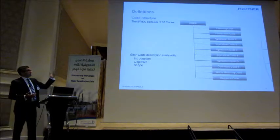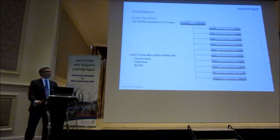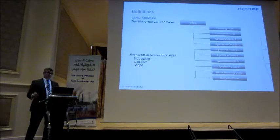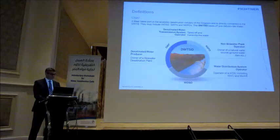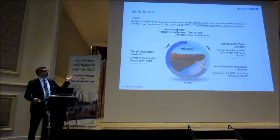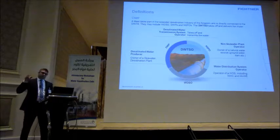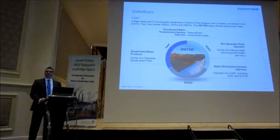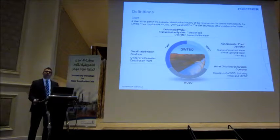The seawater desalination code consists of 10 codes together with the general conditions — 11 parts in total. The general conditions give basically the overarching format around the different codes of this document. I'd like to stress again that although Mishari introduced already the most important definitions, this slide will appear throughout the presentation more often to remind you. For the purpose of avoiding misinterpretations, definitions have been introduced to the code. At the end of the code you see a section — glossary, definitions, and abbreviations — which is very important to have at hand when reading through the different parts.